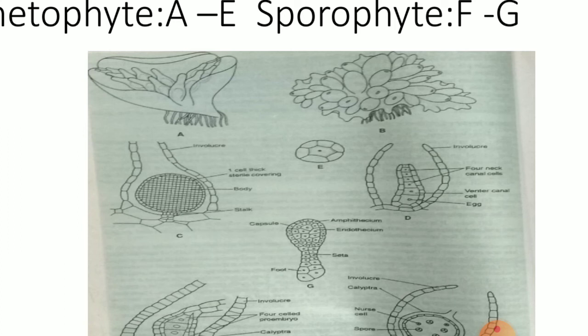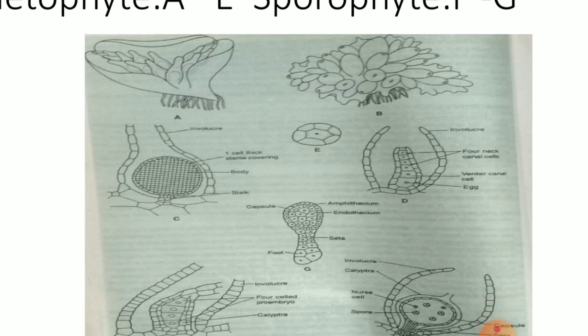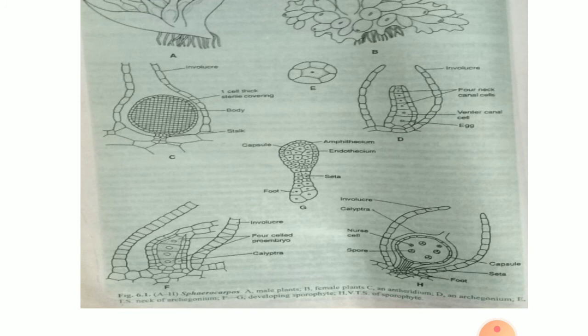Now the sporophyte. The sporophyte of Sphaerocarpus is partially autotrophic in nature. It is trying to become independent due to the presence of chloroplasts in the cells of the capsule wall and sterile nurse cells.